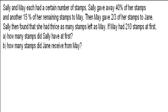Hello, here is a P6 question on percentage and fractions. Sally and May each had a certain number of stems. Sally gave away 40% of her stems and another 15% of her remaining stems to May. Then May gave two-thirds of her stems to Jane. Sally then found that she had thrice as many stems left as May. If May had 210 stems at first, A: how many stems did Sally have at first? B: how many stems did Jane receive from May?